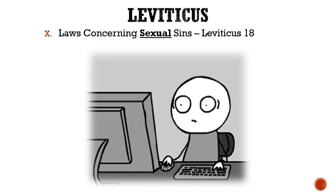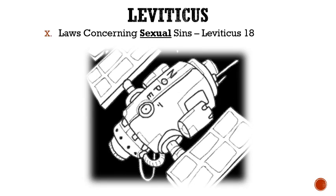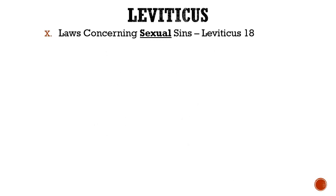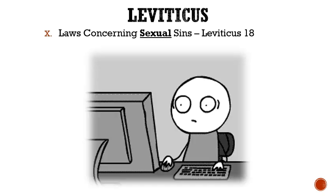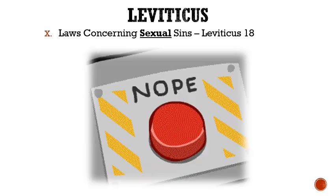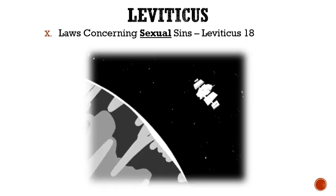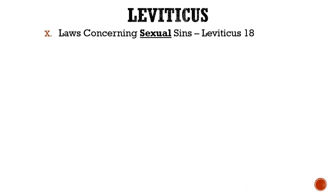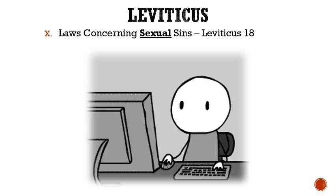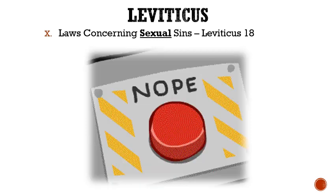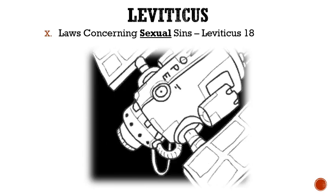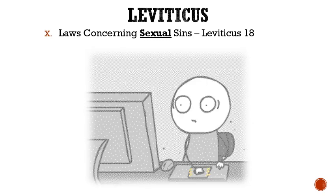Roman numeral 10: Leviticus 18 gives us laws concerning sexual sins. Some of these sexual sins are: do not look at the nakedness of your kin — this included your mother, father, sister, brother, aunt, uncle, step-parents, step-siblings, and even your in-laws. Also, do not look at the nakedness of your neighbor's spouse. In addition, do not have sex with the same gender, and do not have sex with an animal. All of these sins are considered abominations to the Lord punishable by excommunication. However, we will find out later that having sex with the same gender or having sex with an animal was also punishable by death.